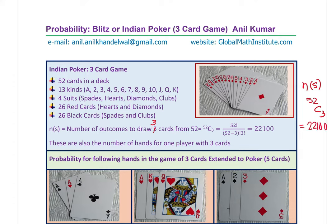So 52C3 = 22,100 is the number which goes in the denominator when we find probability. These are also the number of hands. Sometimes the question could be: how many hands can you have when you draw only three cards from a pack of 52? There could be 22,100 hands.